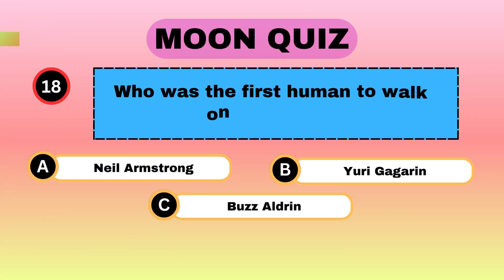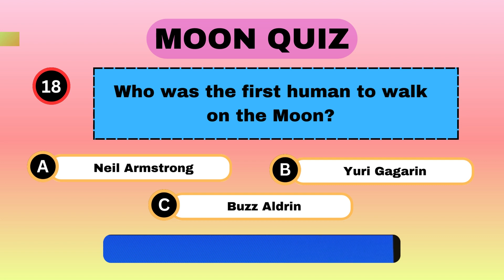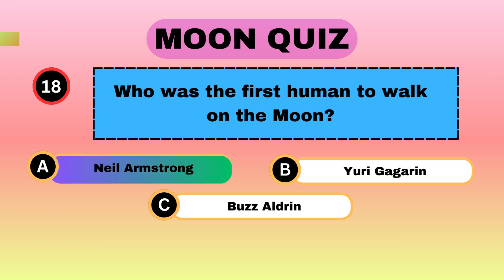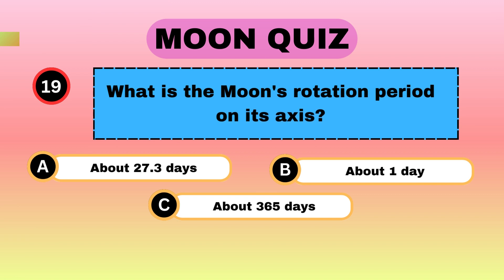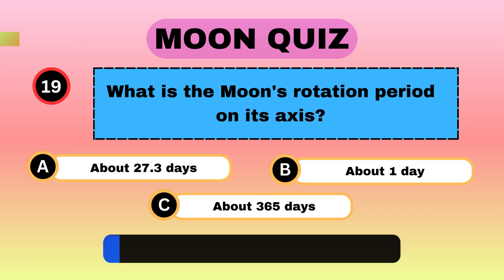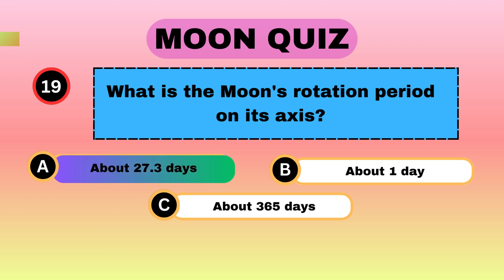Who was the first human to walk on the Moon? Neil Armstrong. What is the Moon's rotation period on its axis? About 27.3 days.